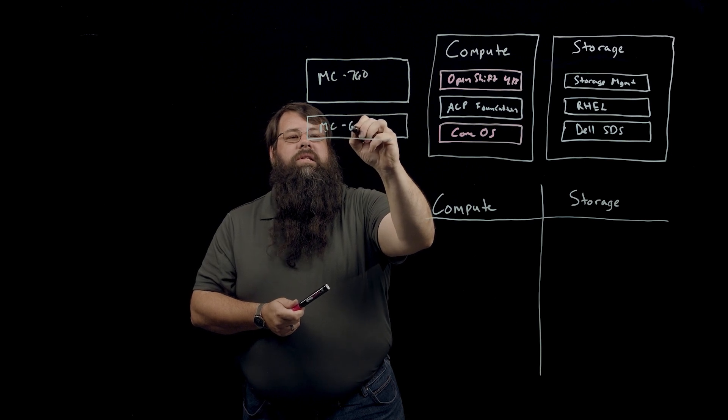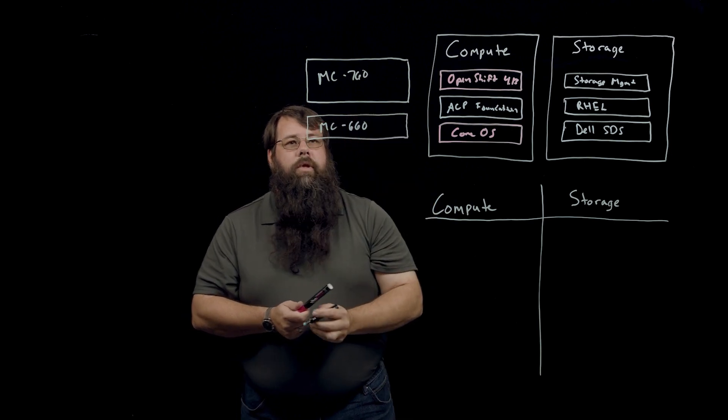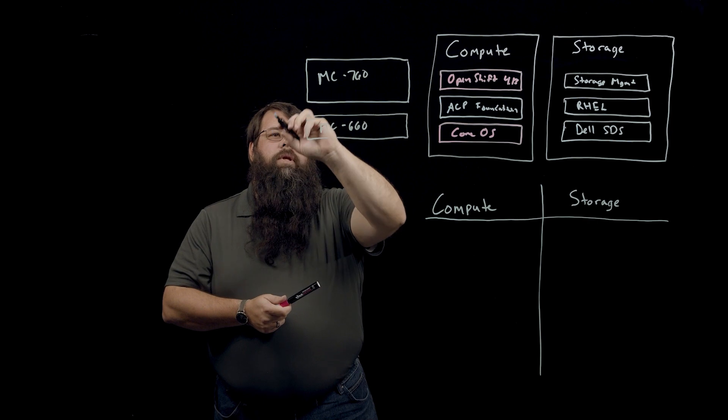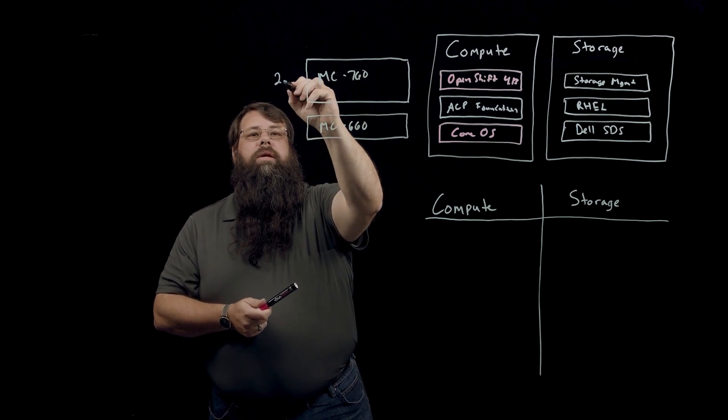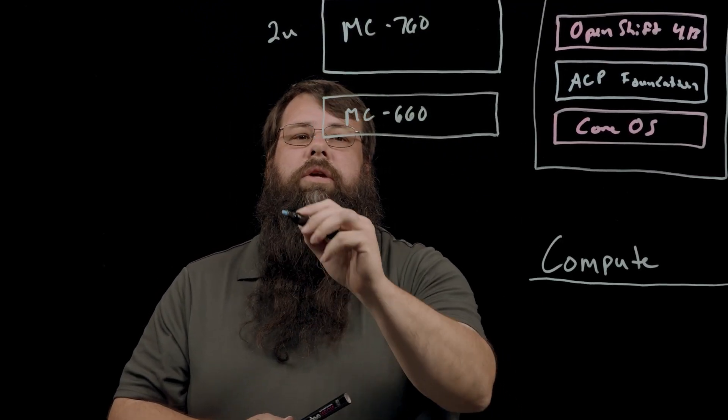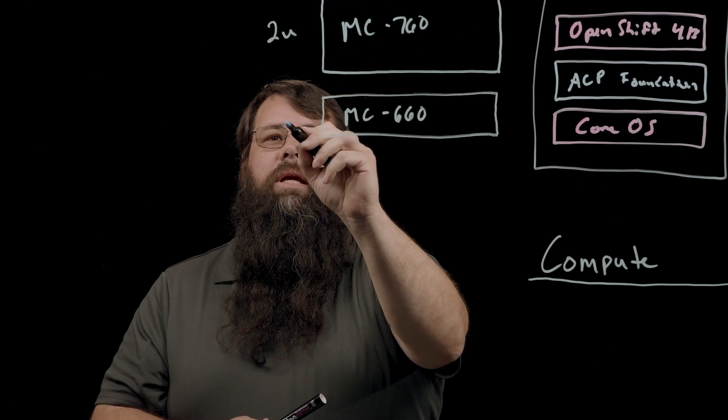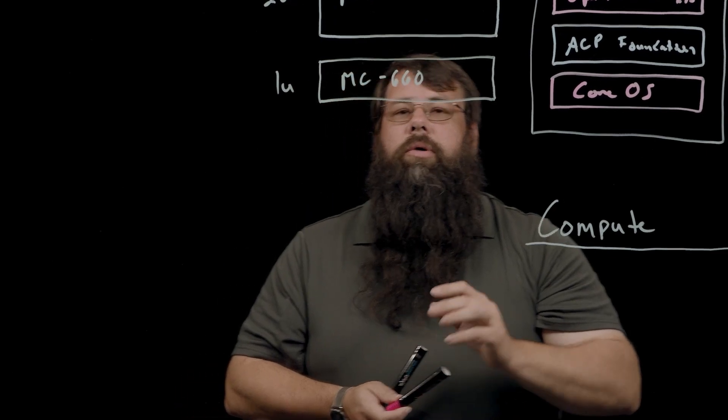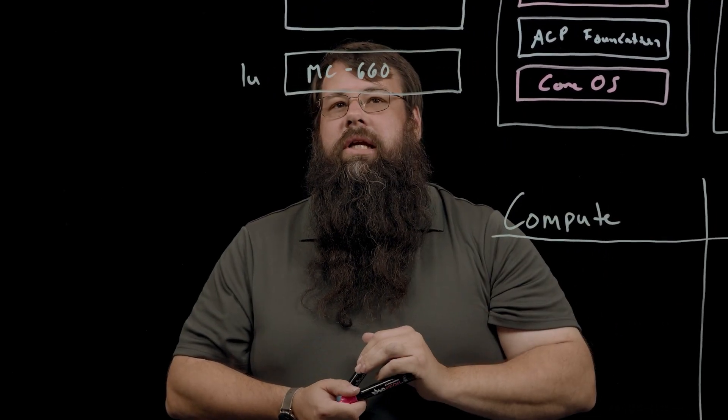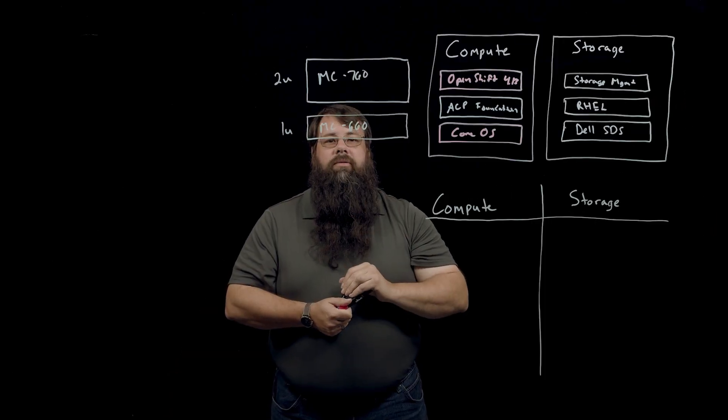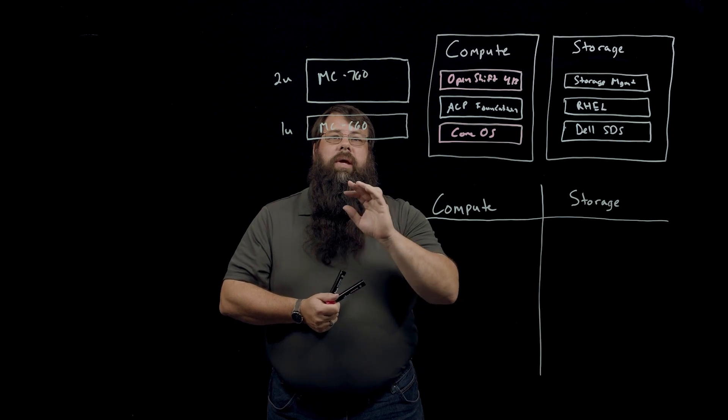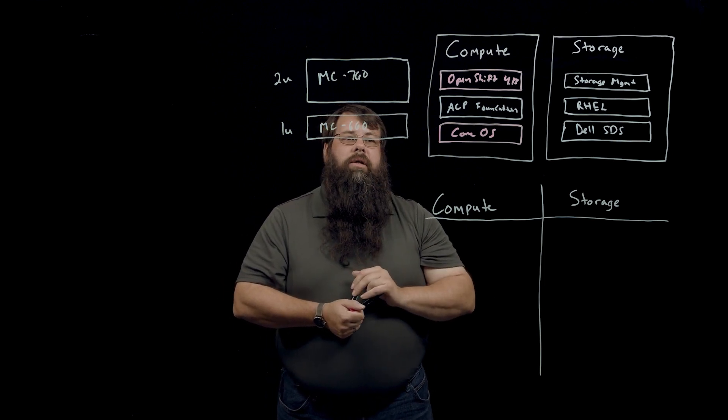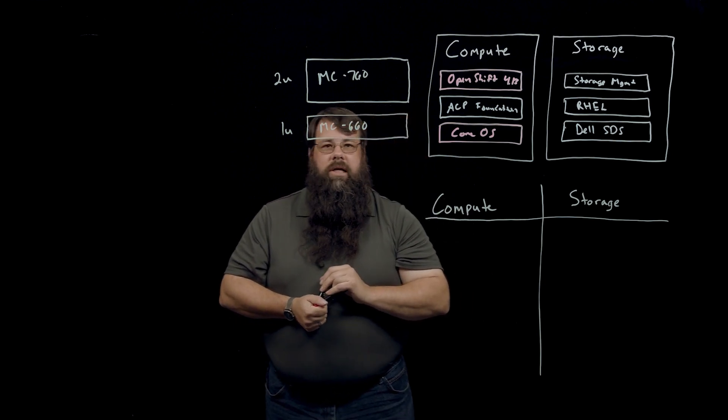The MC760 is a 2 rack unit configuration, and the MC660 is a 1U configuration. Both of these are based on our 16G Dell PowerEdge platforms, and based on the Intel 4th generation scalable Xeon processors.